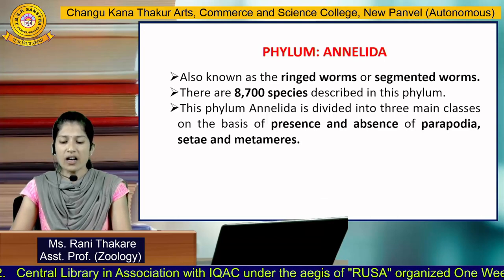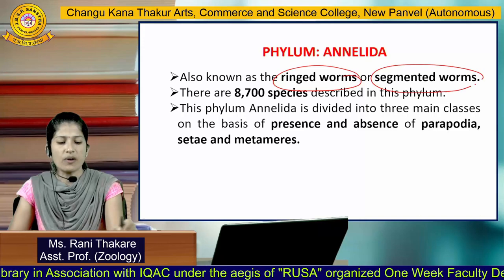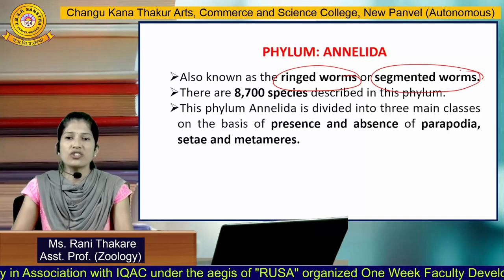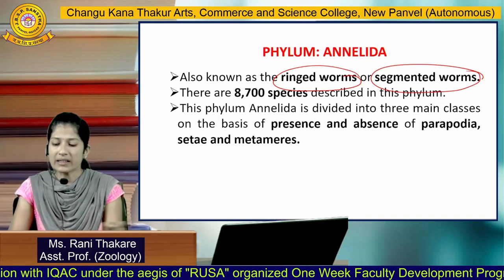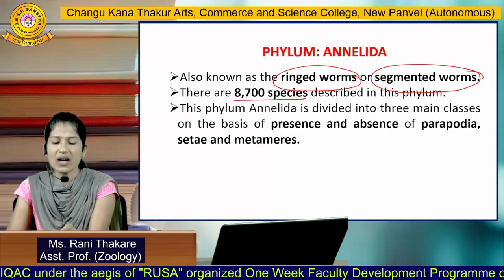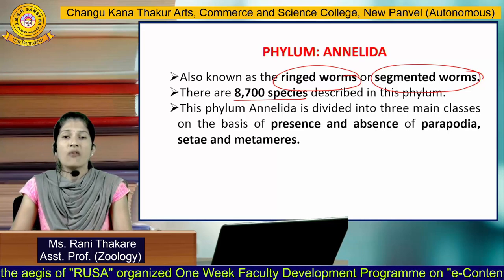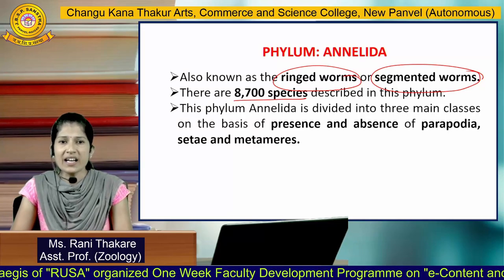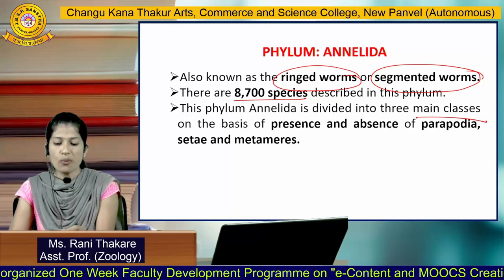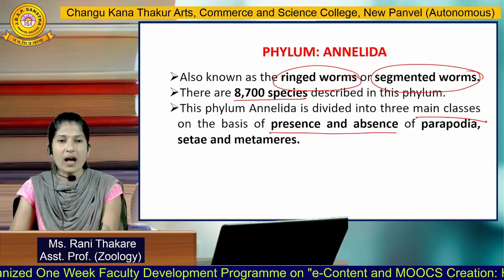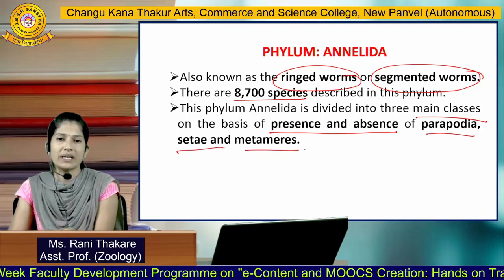Phylum Annelida — these are also known as ringed worms or segmented worms, because their body is made up of segments. This phylum includes about 8,700 different species. Annelida is divided into three main classes on the basis of the presence and absence of parapodia, setae, and metameres — metameres being the body segments.